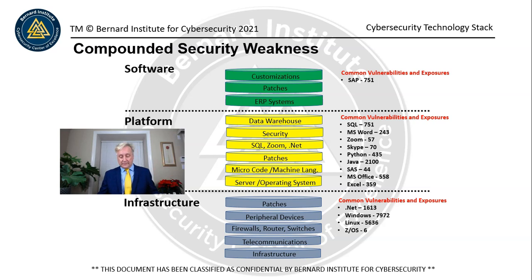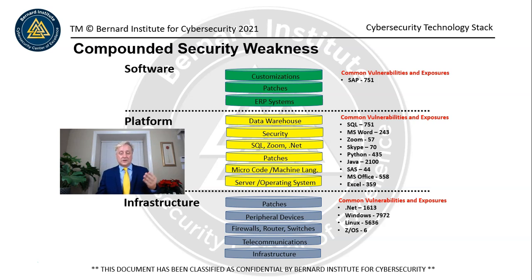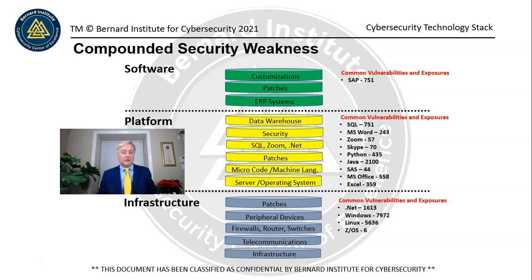A classic example is the Stuxnet worm, which almost created a nuclear meltdown of a reactor in Israel. This was a very serious worm that got into the infrastructure through a thumb drive — a USB drive used to copy or save information. A USB can also contain code, so someone can load code onto a USB and when you plug it into a device, it can automatically get copied over and executed. Some operating systems automatically execute code — the majority of them do. Anything that's Unix will execute automatically without reading it.